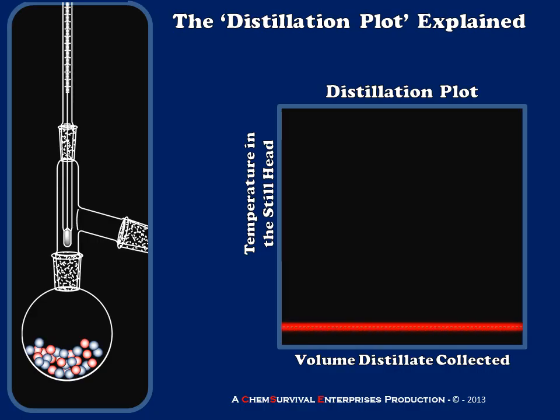I'm going to start off by just marking the boiling points of my pure components. The red would be the more volatile, and in this case let's make the blue component the less volatile.